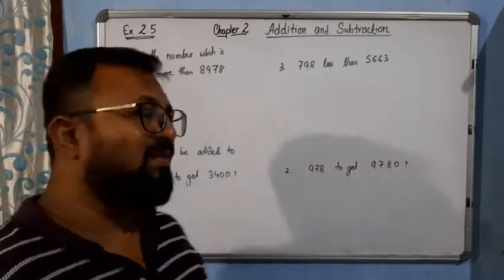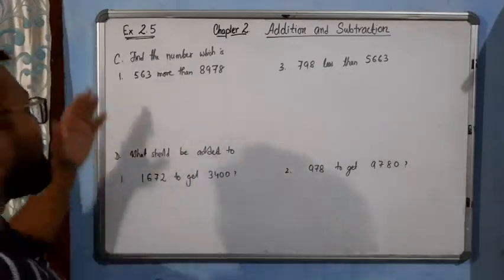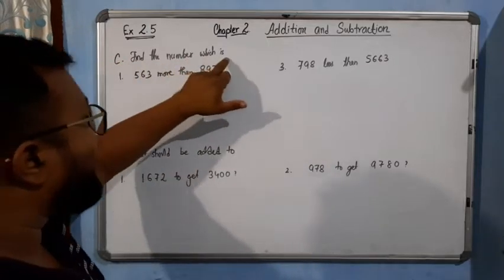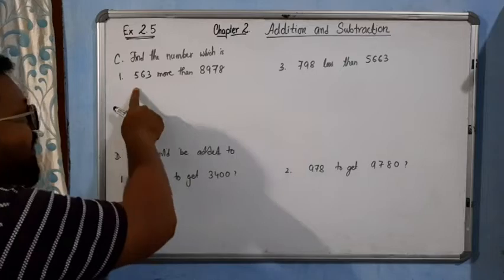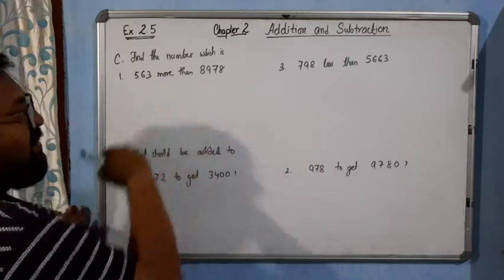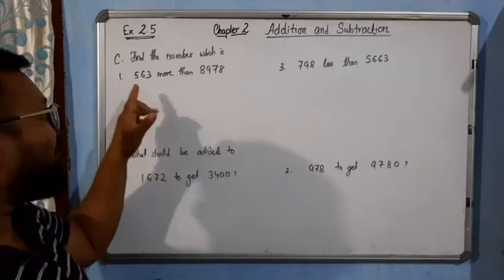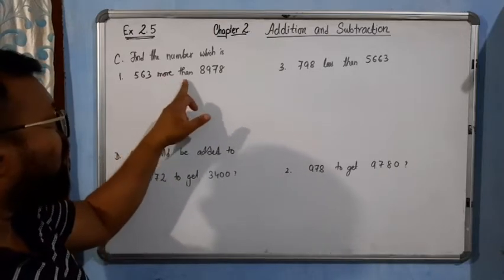Hello students, now come to the next question, question number C and D. In question C, find the number which is 563 more than 8978. We need to find that number which is 563 more than this.